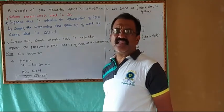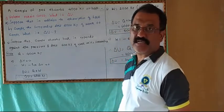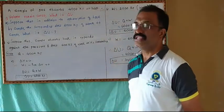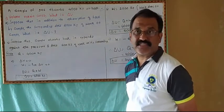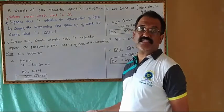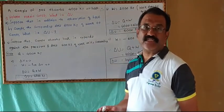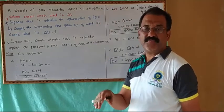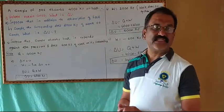When heat is absorbed by the system, Q has a positive sign. When heat is given out by the system, it has a negative sign. When work is done by the system due to expansion, work has a minus sign. When compression is done by the surroundings on the system, it has a positive sign.